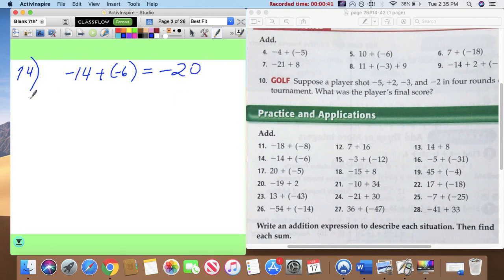Now 15: negativo 3 plus negativo 12. Son amigos, they're friends again, so there's no fighting. I'm just going to combine negative 3 and negative 12, and you get negative 15. Problem 16: negative 5 plus negative 31. Otra vez, again, they're all friends. Negative 5 plus negative 31, negative 36.